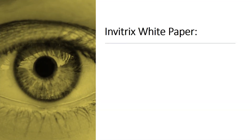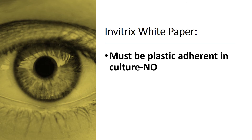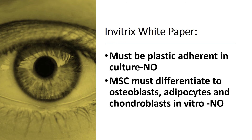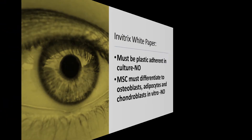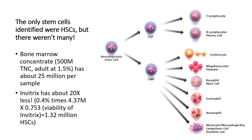The Invitrix white paper also didn't show that these cells were plastic-adherent in culture, which they needed to demonstrate. It also didn't show that these cells could trilineage differentiate. The only cells identified were hematopoietic stem cells, and there were very few of these — only about 1.3 million in the sample tested. In contrast, the average adult bone marrow sample has about 25 million hematopoietic stem cells.